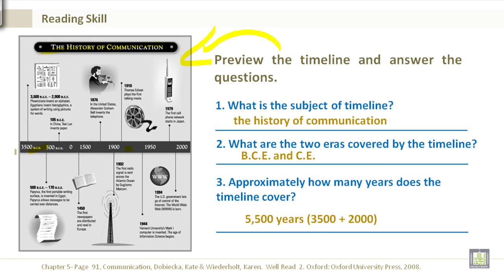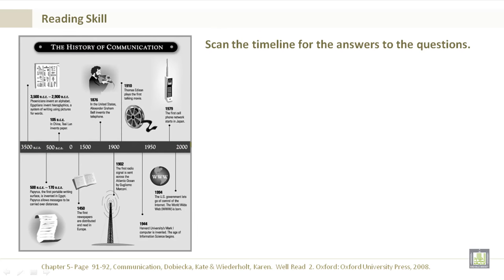It starts in 3,500 BCE — that is before 0 — so 3,500, and it goes up to the year 2000, so together that's 5,500 years.